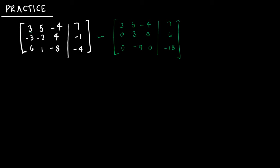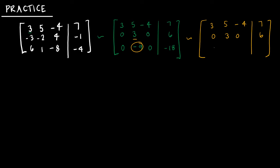From here, I want 3 to be a pivot, so I need to make negative 9 into a 0. My matrix now has row 1 as 3, 5, negative 4, 7; row 2 as 0, 3, 0, 6. I'm going to take positive 3 times row 2 and add it to row 3, giving me 0, 0, 0, 0. So we can see that x3 is free.